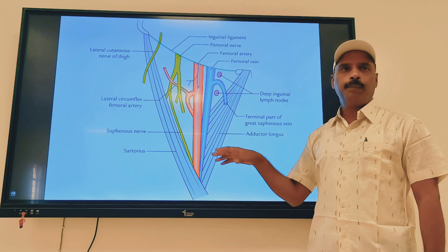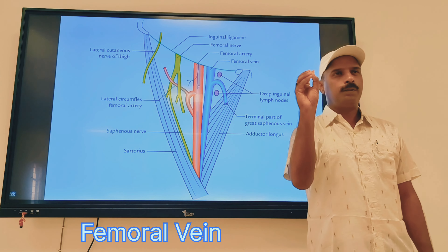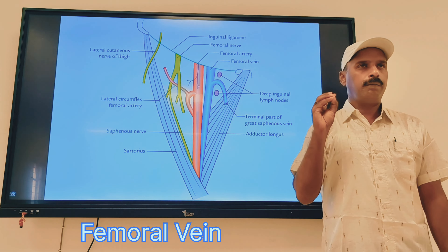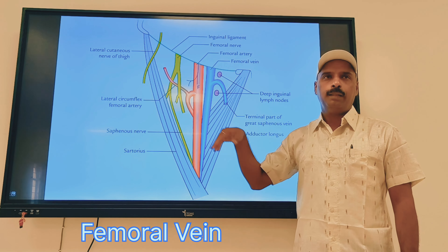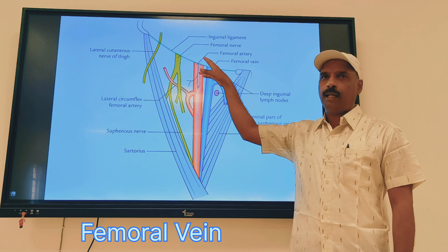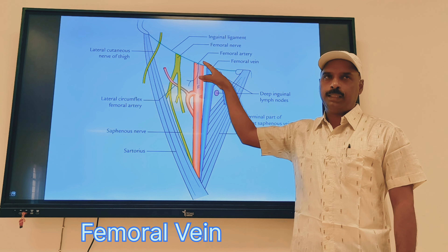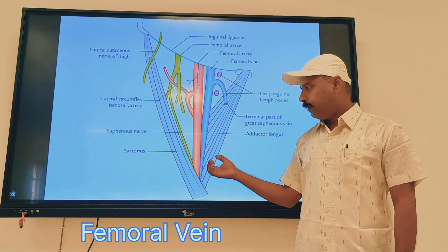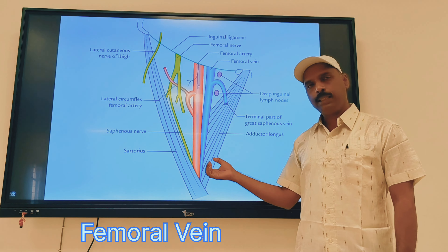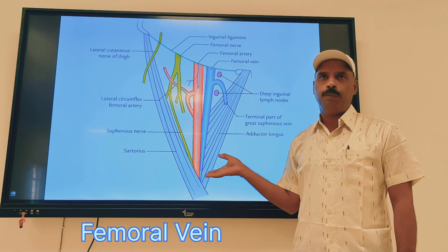In the femoral triangle, the vessel we have to deal with now is the femoral vein. We are going to discuss only a few points of the femoral vein. Any vein we discuss, we explain from distal to center, because the vein carries deoxygenated blood from the distal to the center. So we have to explain the femoral vein from below upwards.